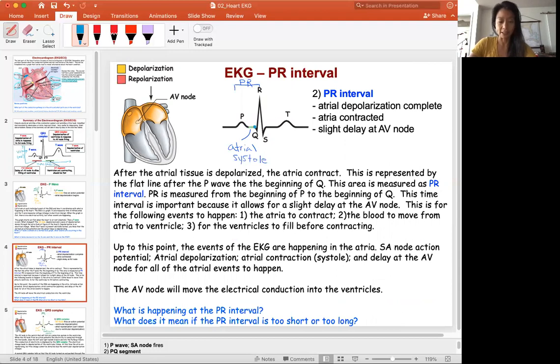In this flat line area, what's happening? There is no electrical change but something is happening. After the atrial tissue is depolarized, it's enough time for it to do work. So the work that is doing is contraction. This flat line is actually quite important because this is where the atrial systole or contraction is happening.